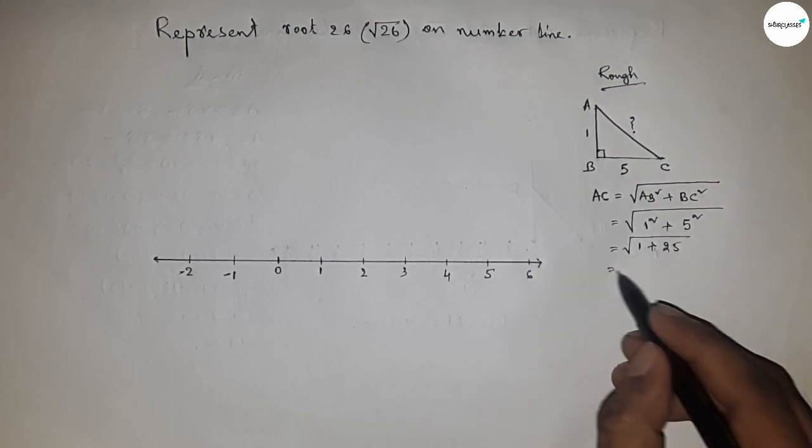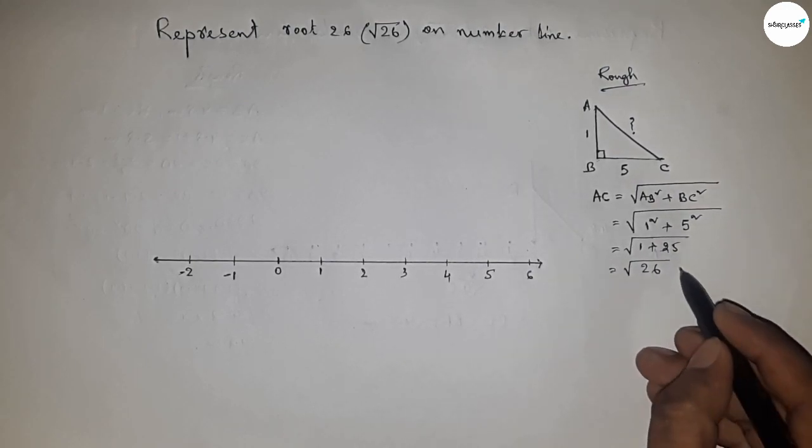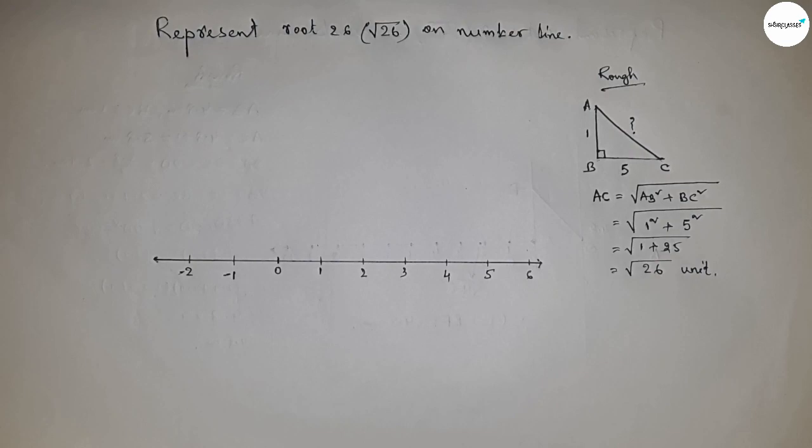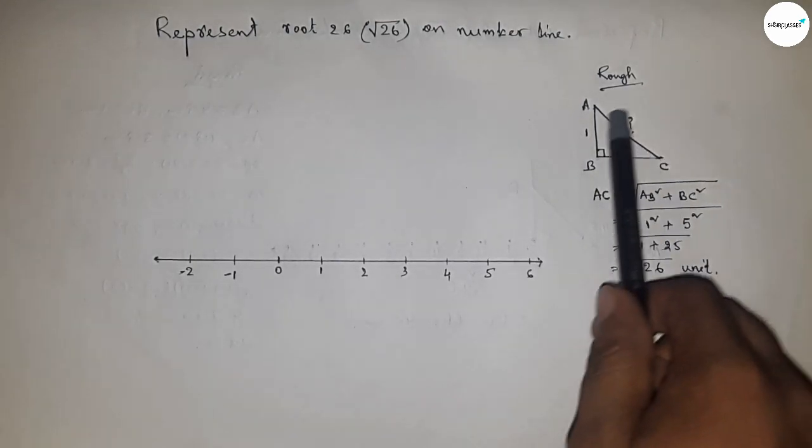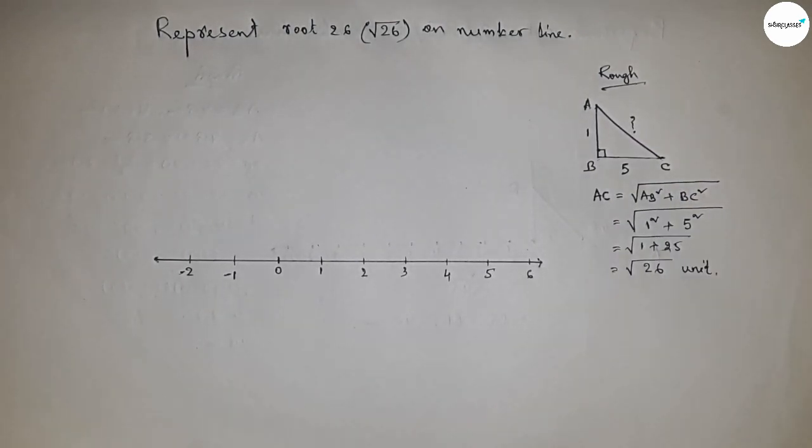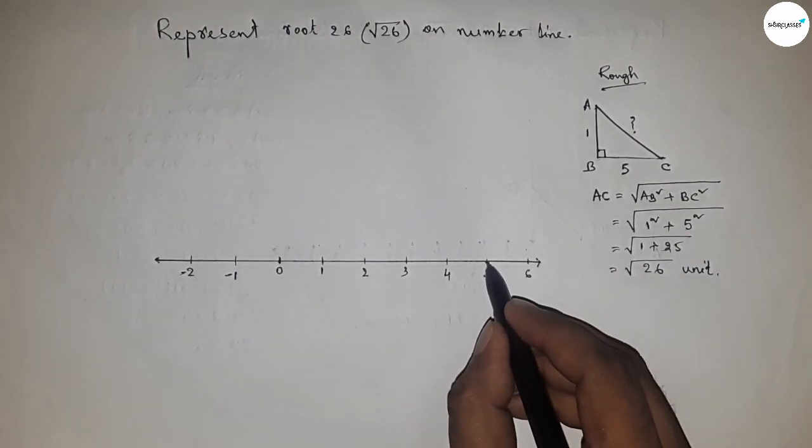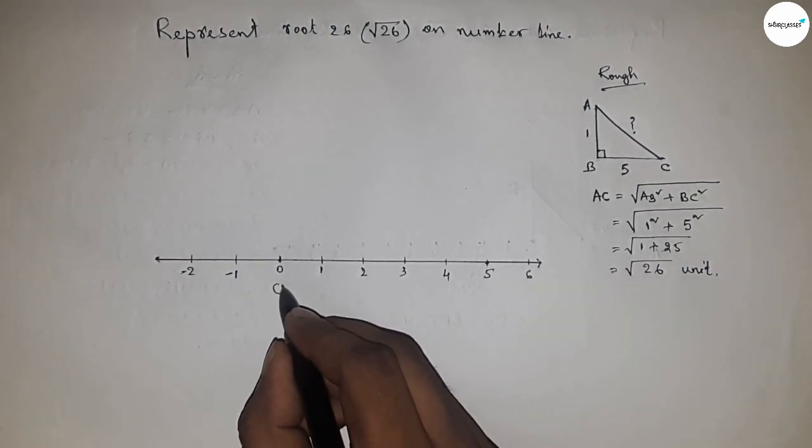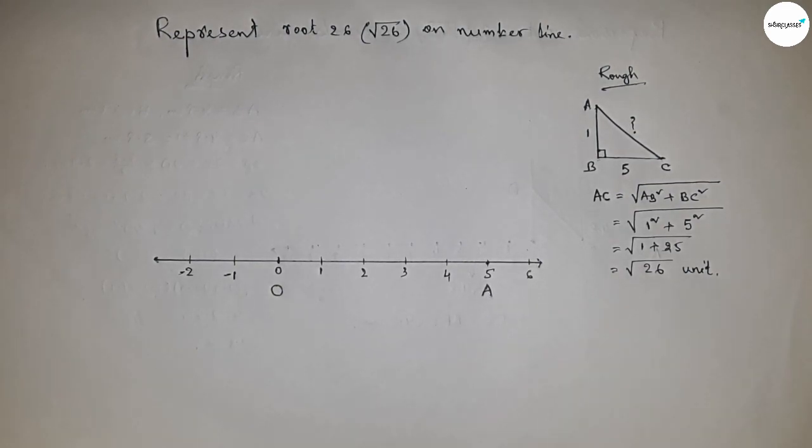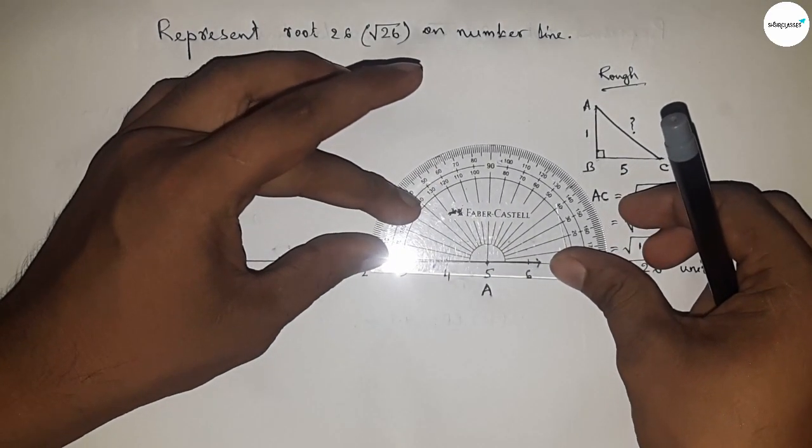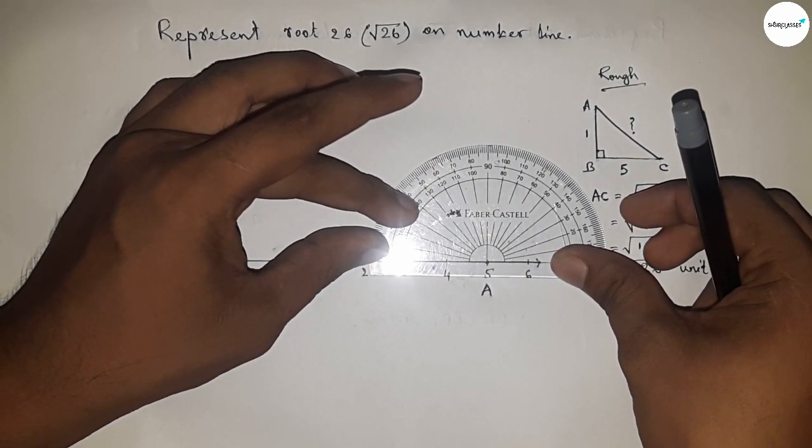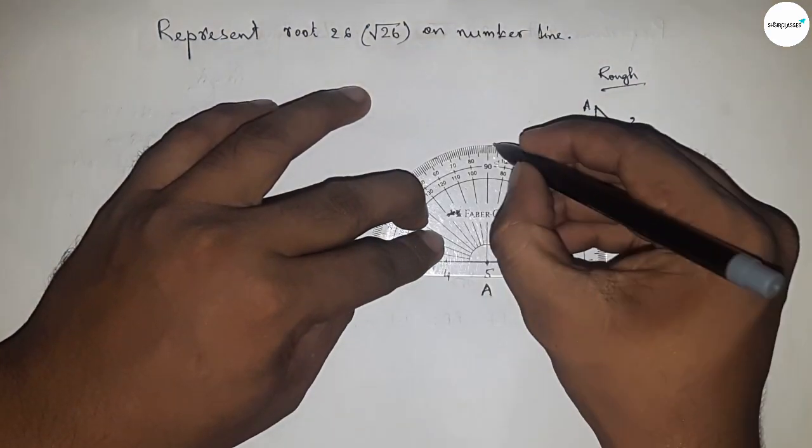Now I'm going to apply this concept here. From 0 to 5, the length equals 5 units. So first, draw a 90-degree angle on point 5, or A. Draw the 90-degree angle on point A by using a protractor.